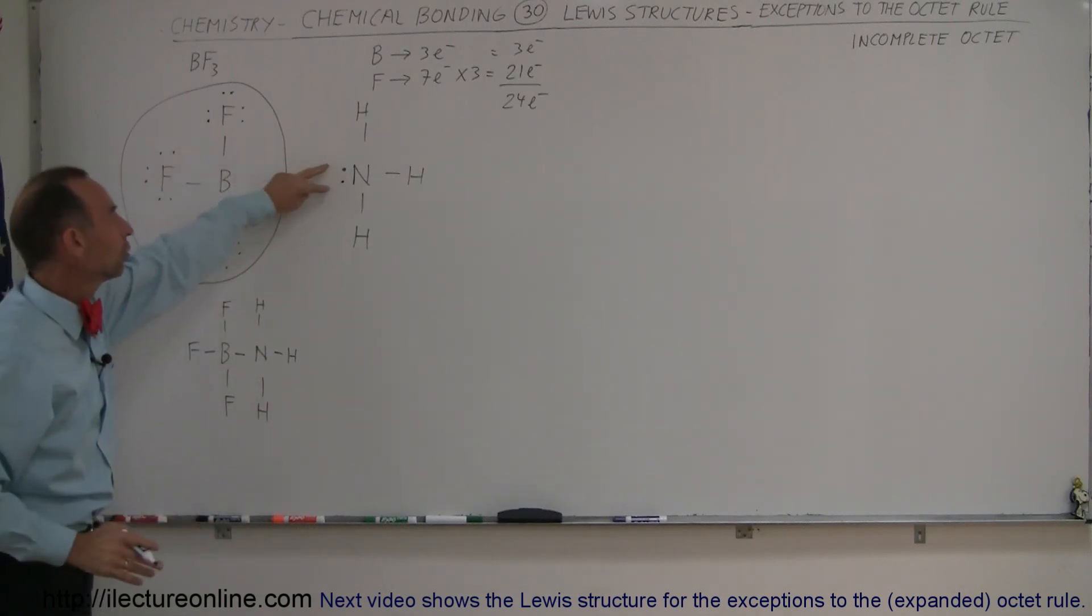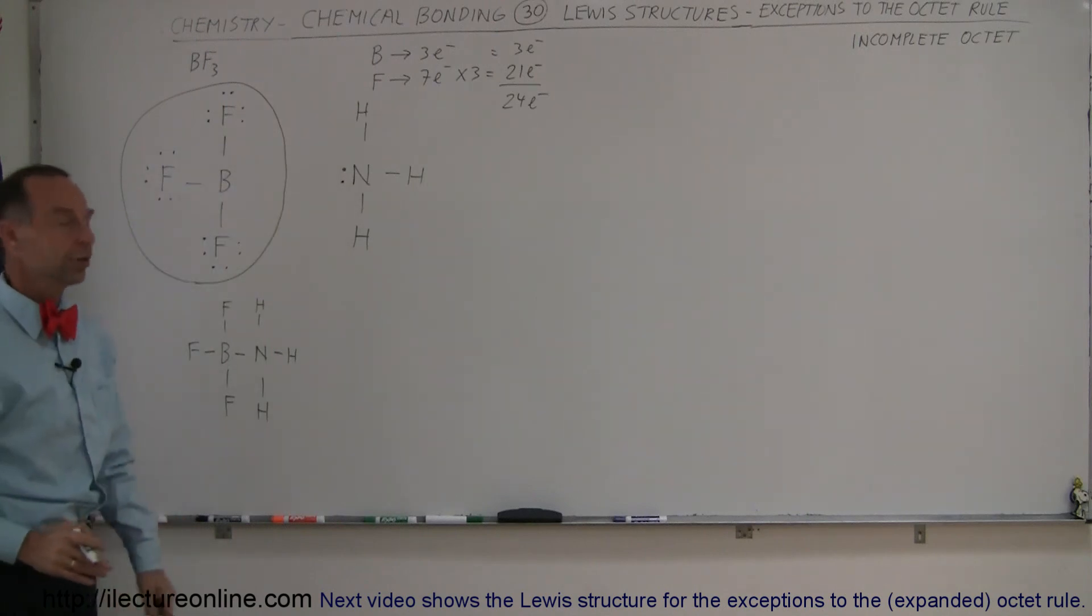It can draw in the two valence electrons of another molecule like that. But to give you an idea, this is a perfectly happy molecule, boron trifluoride, without the octet rule being followed for every one of the atoms in that molecule.